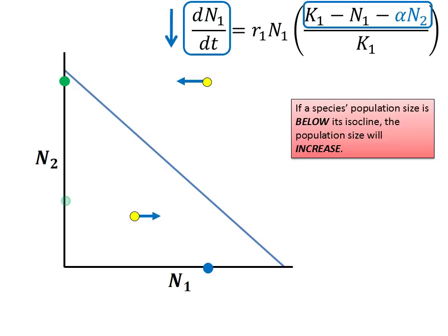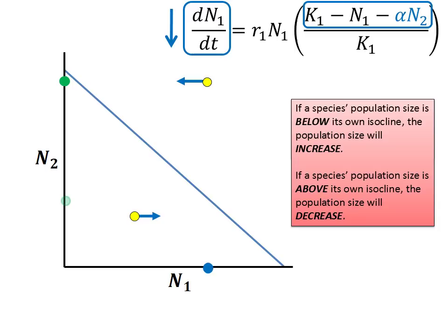This is a generalization that will also hold true. If a species population size is above its own isocline, the population size will decrease. Notice that our increase and decrease arrows are only pointing left and right. This is because right now we are only considering the species 1 isocline and what happens to n1. Because this population is plotted on the horizontal axis, moving to the right is increasing and towards the left decreasing.